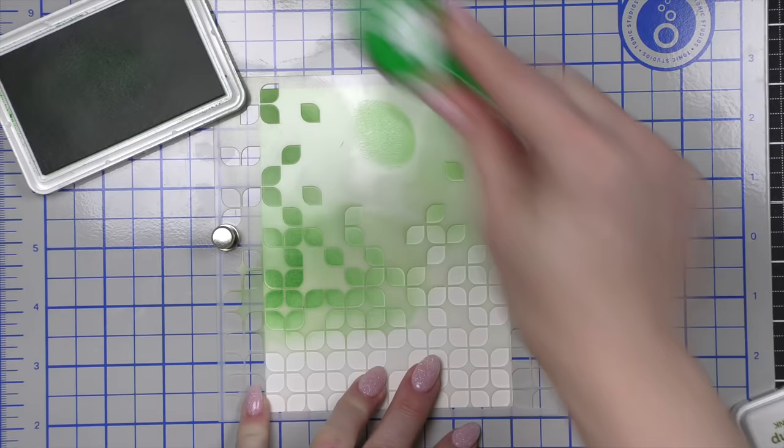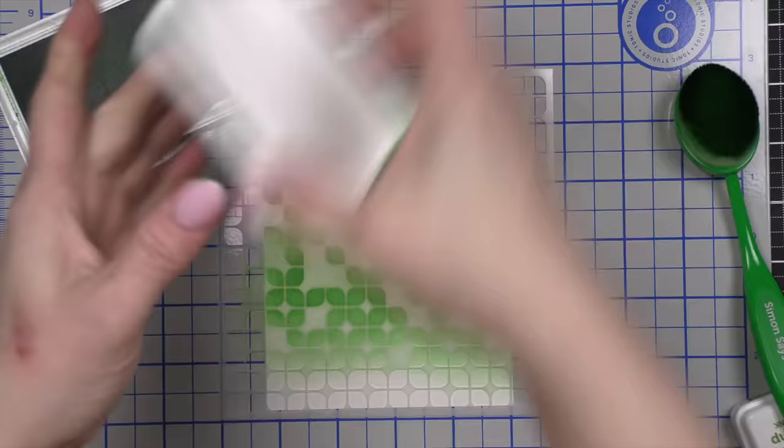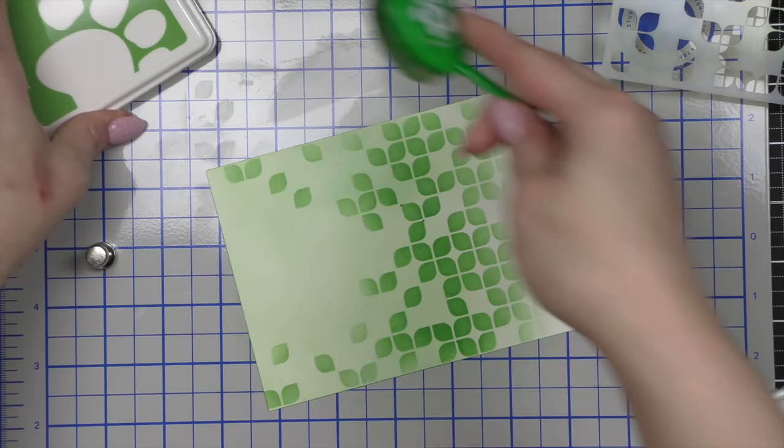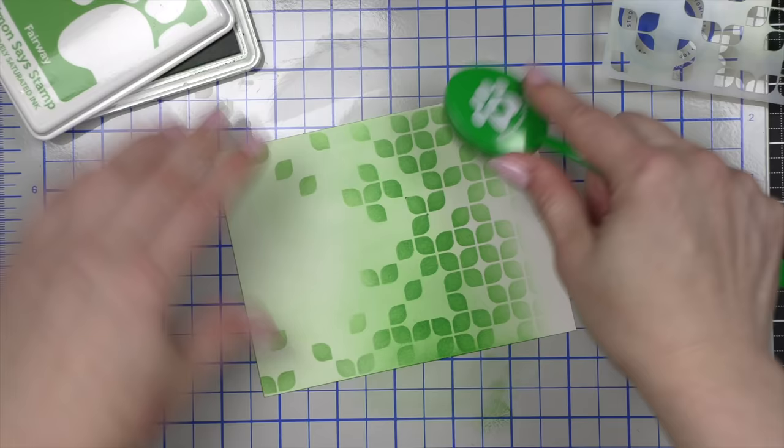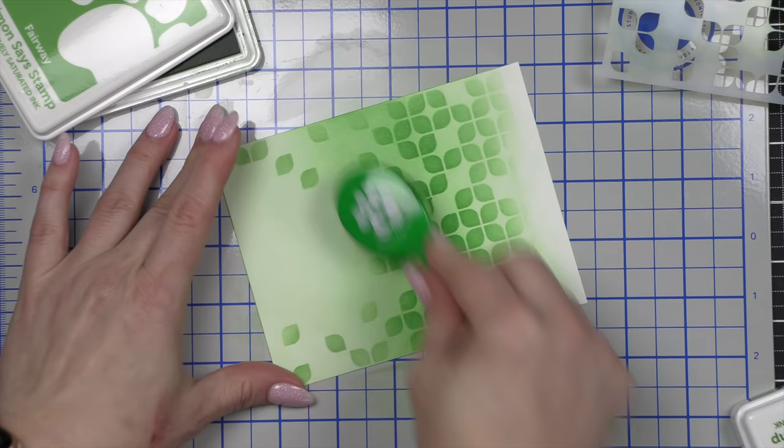Now I'm using some Fairway ink. That's the mid-tone color in this trio of inks. Again I'm going to peel this up and I think I'll go ahead and add the Fairway. And I realized about this point I don't think the leftover ink on my blending brush is going to give me quite as much ink as I would like. So I'm going to re-ink my blending brush and we're going to use a little heavier hand over the top of this.